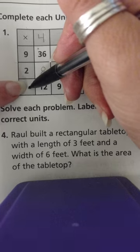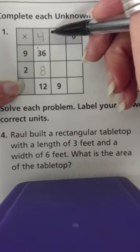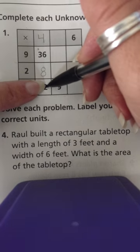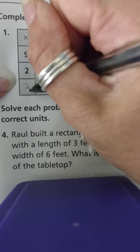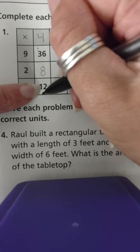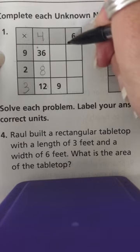Here I'm missing a factor but I have the product. What number times four equals twelve? Three times four. Three times four is equal to twelve.